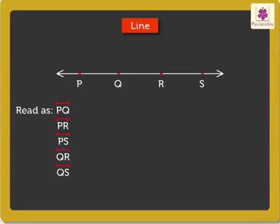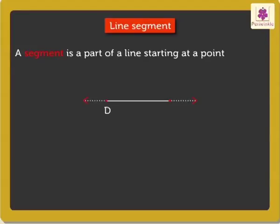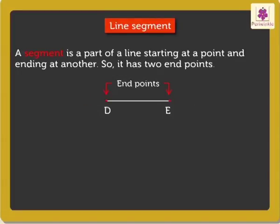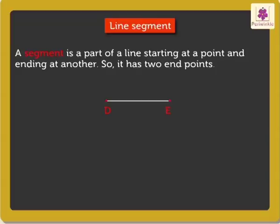Coming to Line Segment. A segment is a part of a line starting at a point and ending at another. So, it has two end points. We can measure a line segment. Segment DE is a part of a line starting from D and ending at E. D and E are called the end points of segment DE. It is written with the symbol of the line segment over the letters like this. We read it as Line Segment DE or Line Segment ED.